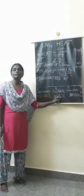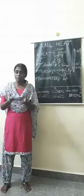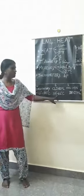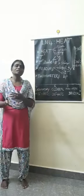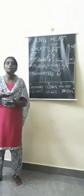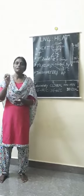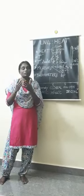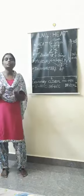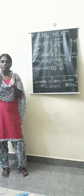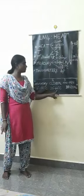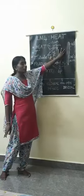The next one is the clinical thermometer. It is used to measure our body temperature. The range of the clinical thermometer is 35 to 42 degrees Celsius. Why between 35 and 42 degrees? Because our normal body temperature is 37 degrees Celsius, and body temperature will not go below 35 or above 42 degrees Celsius.